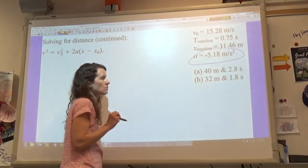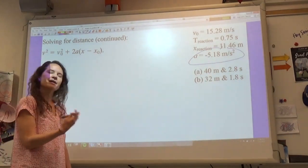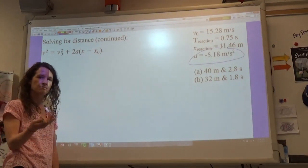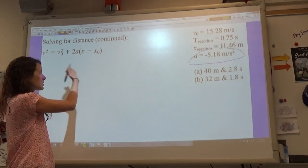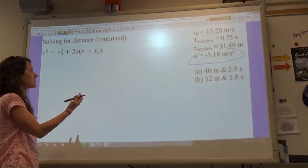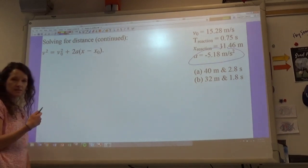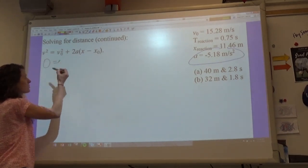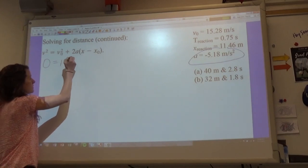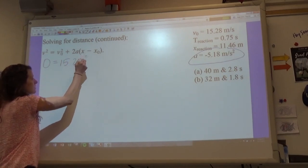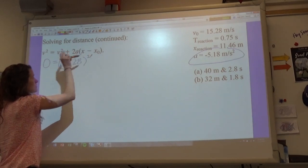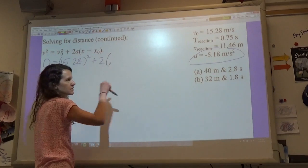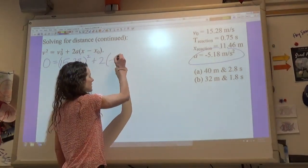So we do not know how long it's necessarily going to take us to stop, so I chose a kinematic equation that does not have time embedded in it. And so we'll go through and we'll put in all the variables that we know. So my final velocity is going to be zero because I'm going to attempt to come to a stop. My initial velocity is that 15.28 meters per second, don't forget to square it.